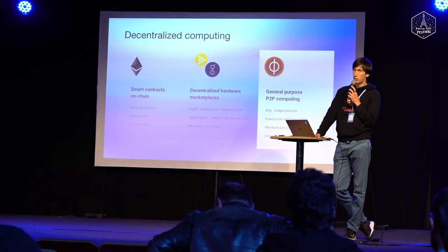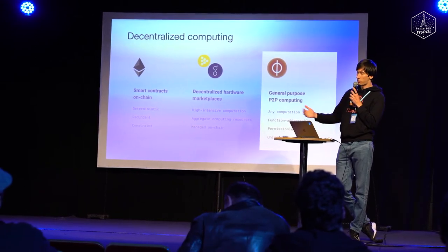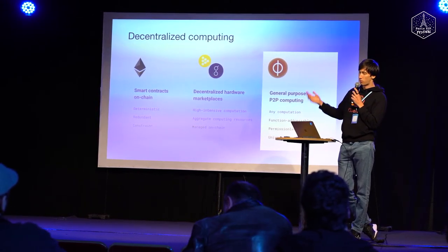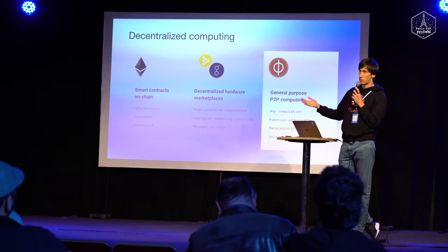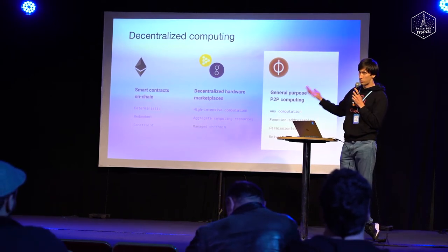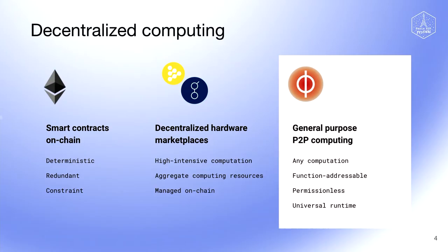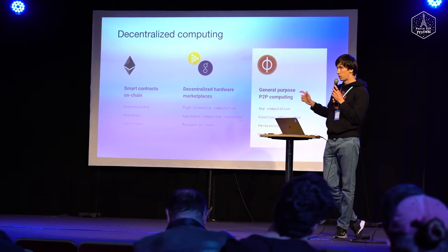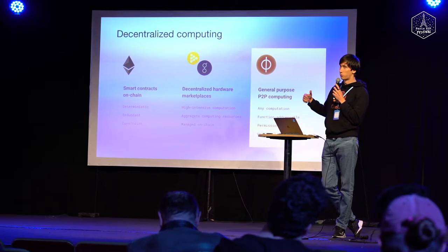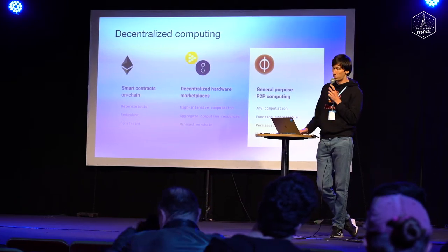But I specifically want to talk about the computing part. The tricky thing is that blockchains are also decentralized computing, but blockchain is very specific decentralized computing with consensus, usually run by all nodes in the network using proof-of-work or proof-of-stake. This basically puts constraints on computation and data, and makes it super expensive.